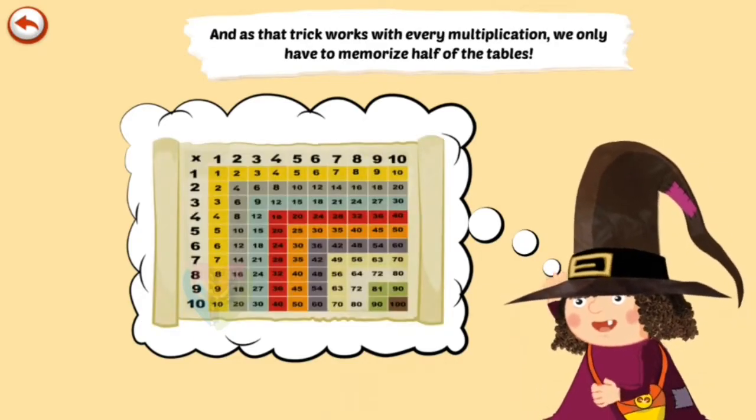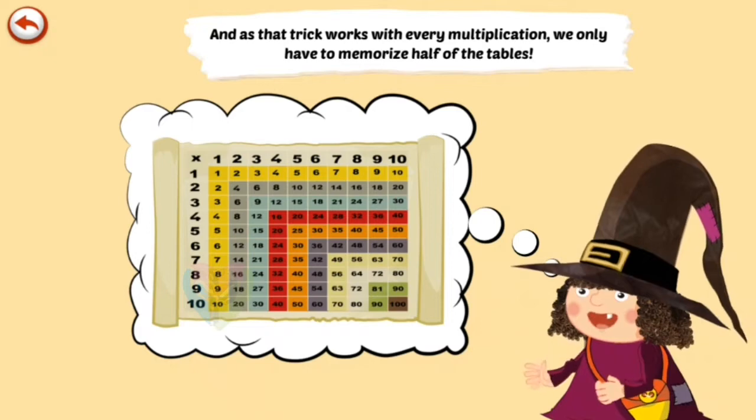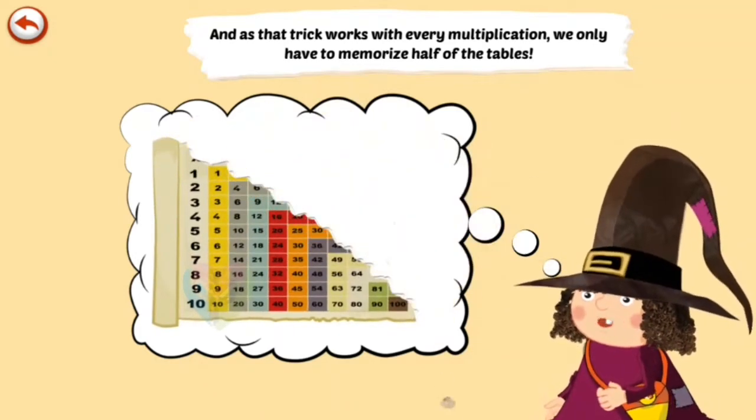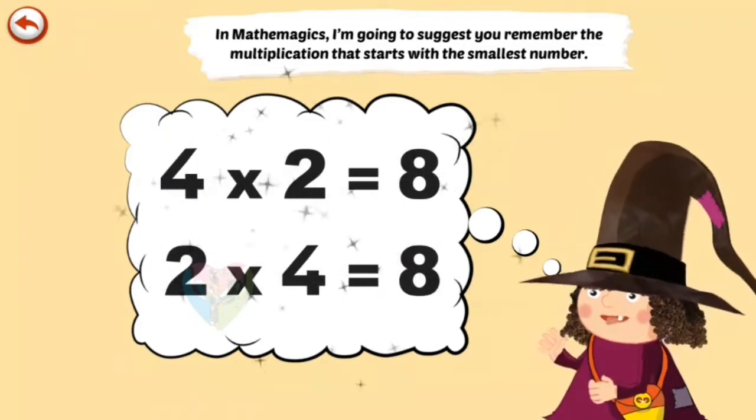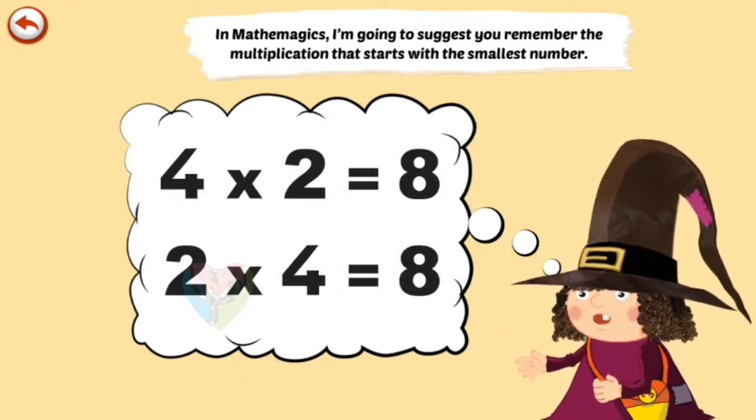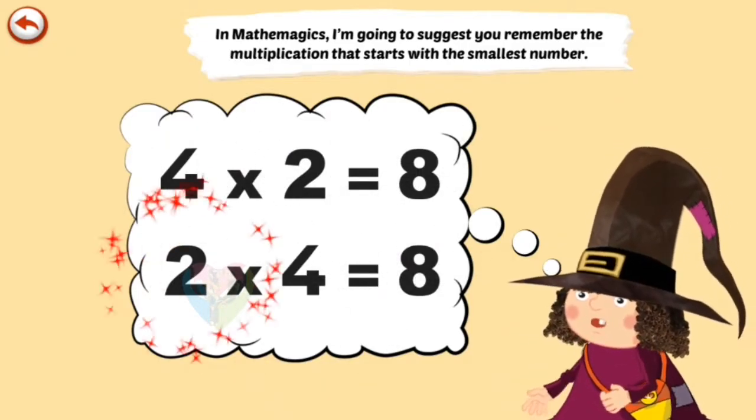And as that trick works with every multiplication, we only have to memorize half of the tables. In Mathemagics, I'm going to suggest you remember the multiplications that start with the smallest number.